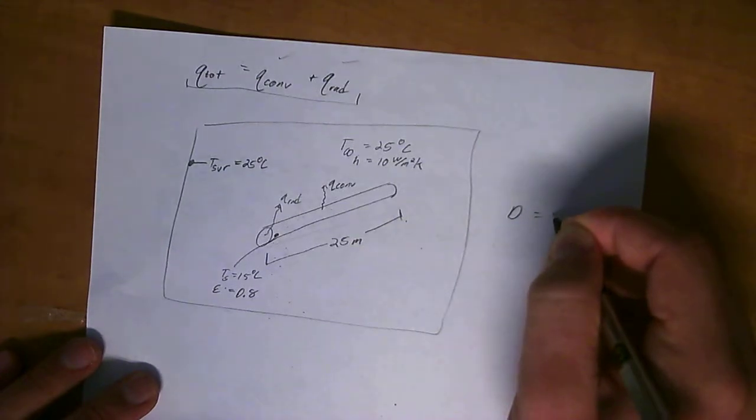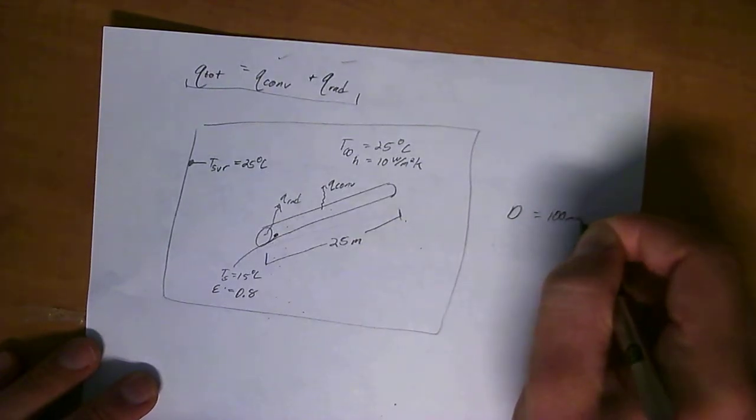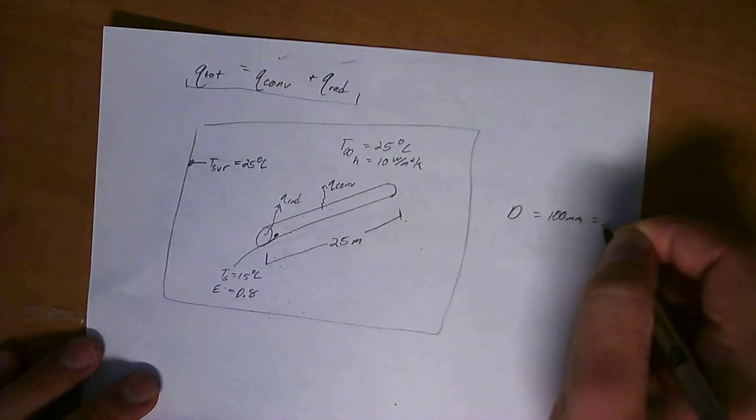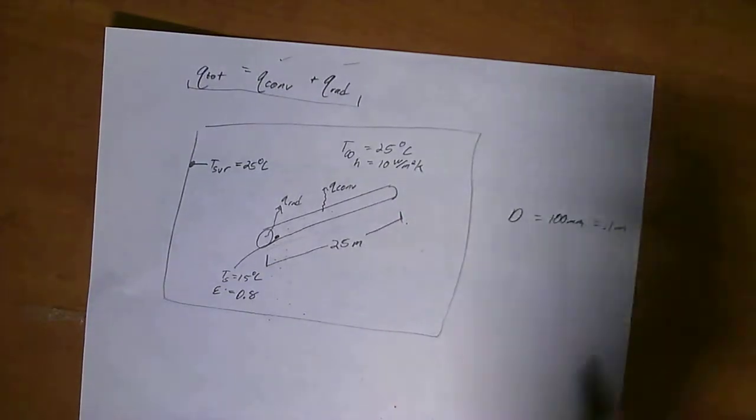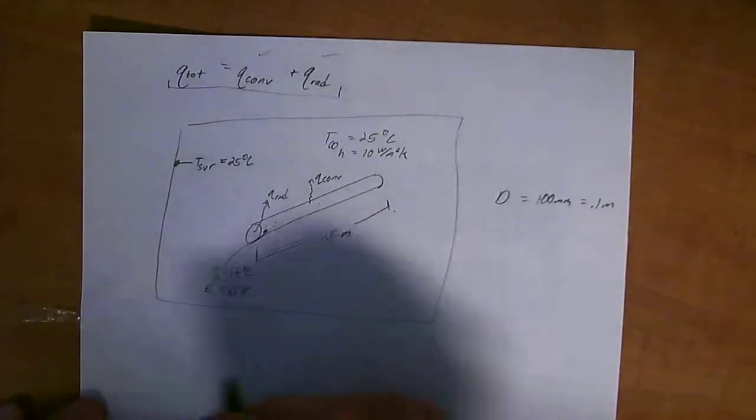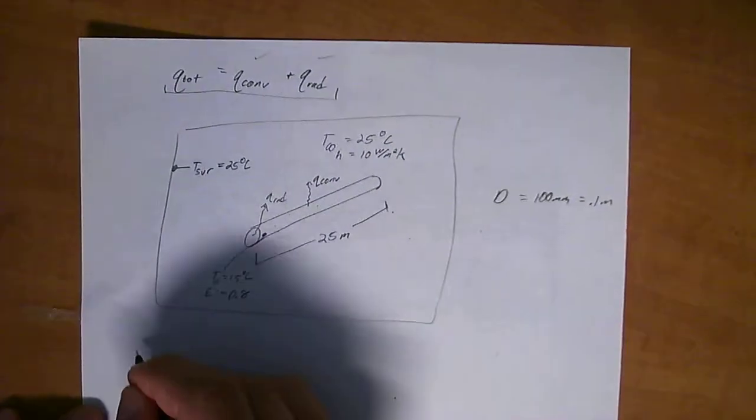So, and then the diameter of the pipe, we'll put this out here, is equal to 100 millimeters, which is equal to 0.1 meters. And I think that's all the chunks of information we get.